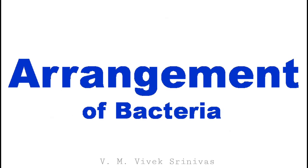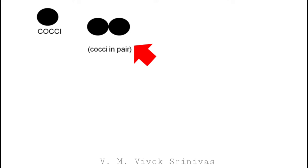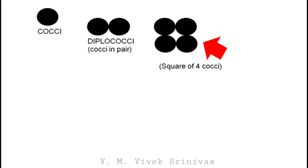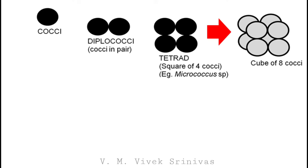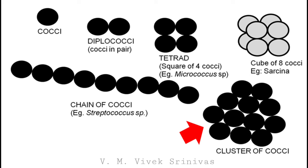Now we will see about the different arrangements observed in bacteria. The spherical shaped bacteria is called cocci. If two cocci are arranged in pairs, it is called diplococci. If in a square of four cocci, it is called tetrad — example: Micrococcus species. Arranged in a cube of eight cocci — example: Sarcina. Cocci arranged in a chain — example: Streptococcus species. Cocci arranged in clusters — example: Staphylococcus species.